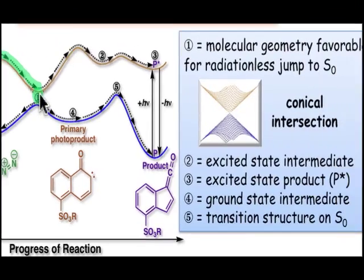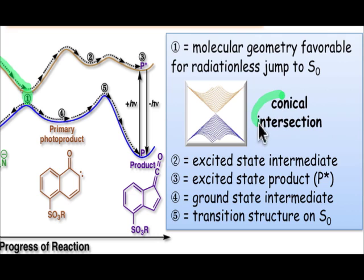This position is what's known as a conical intersection, and at that point it's possible for the molecule to transfer over to the ground state surface, at which point it can continue along in the normal way using thermal motion to promote the reaction leading to the product.